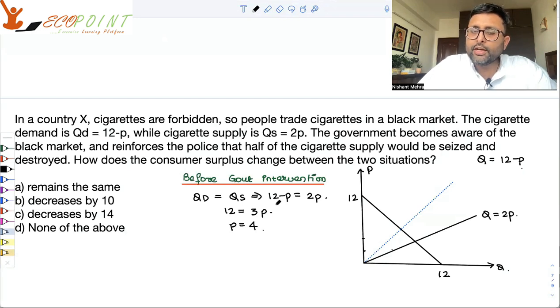You substitute 12 minus P equals 2P. P equals to 4, and you substitute this P equals to 4 in either demand or supply. So Q is equal to 12 minus 4, that is 8.